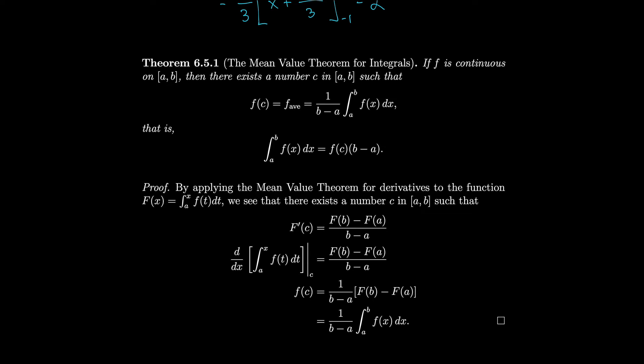Notice why we call this the Mean Value Theorem for Integrals. For derivatives, we said there was some c value where the slope of the secant line equals the slope of the tangent line — the instantaneous rate of change equals the average rate of change. Here we say there is a point somewhere where the average value of the function will actually equal the value of the function.